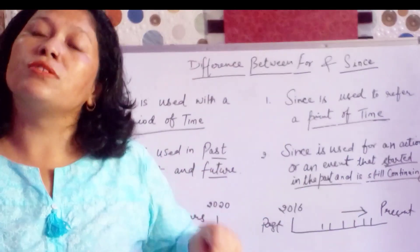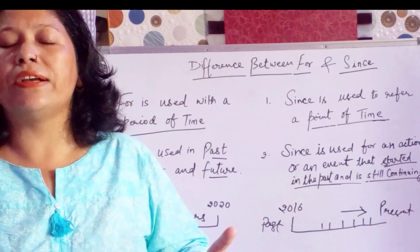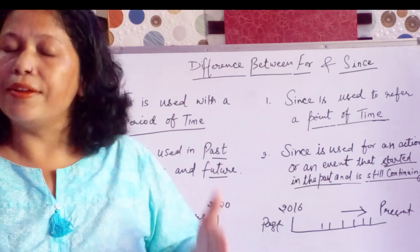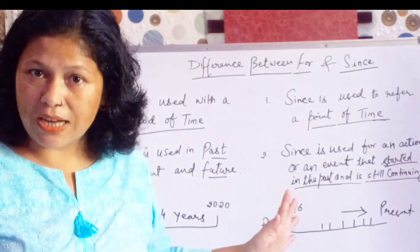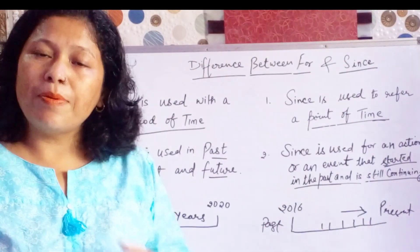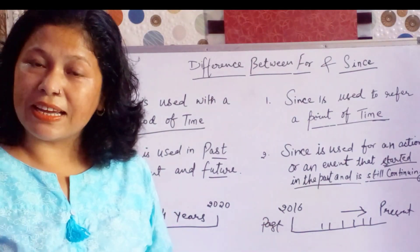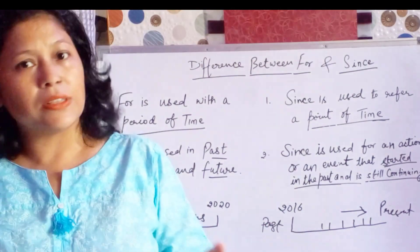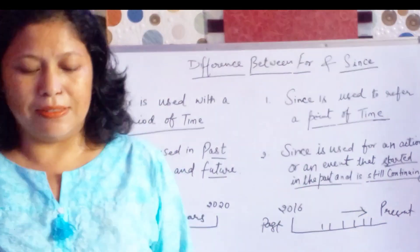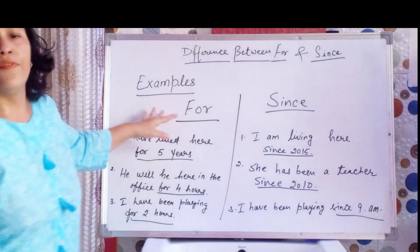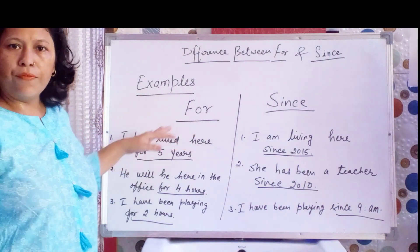'Since' defines the starting point — kab kaun sa kaam start hua. Starting point se define karta hai. Ab hum kuch aur zyada detail mein isko samjhenge, but with the help of examples. Examples of 'for' first.